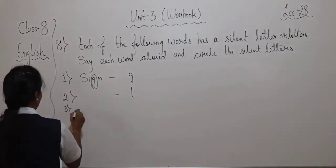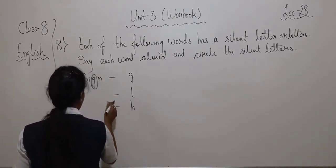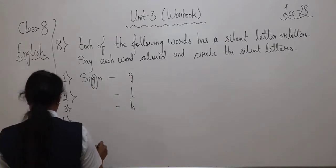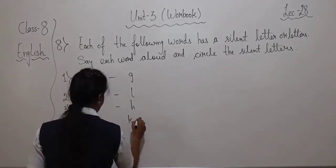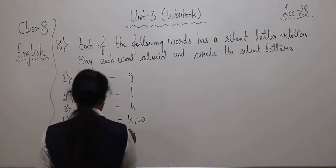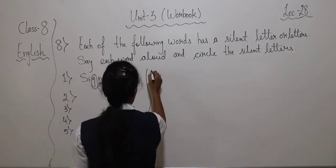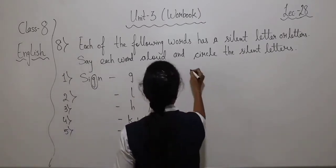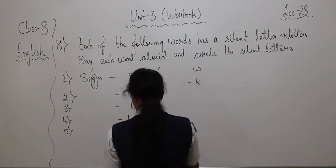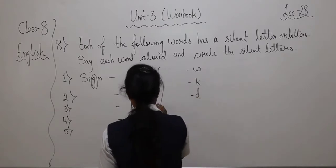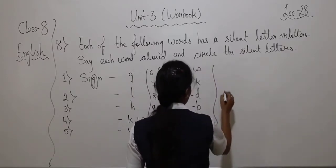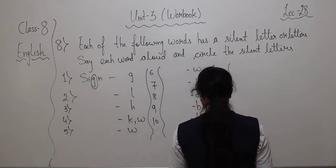Number 3 — wrist — H is silent. Note down the word and circle the silent letter. Then 4 — know — K and W are silent. Then wrist — W is silent. Knife — K, judge — D, doubt — B, watch — T. Note down the word and circle the silent letter.